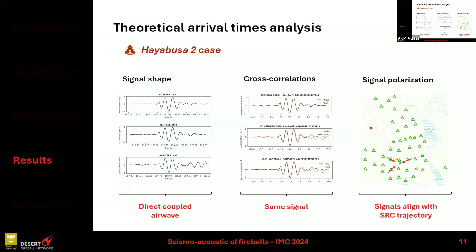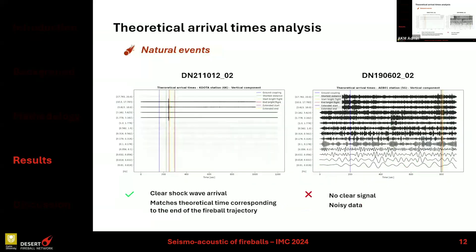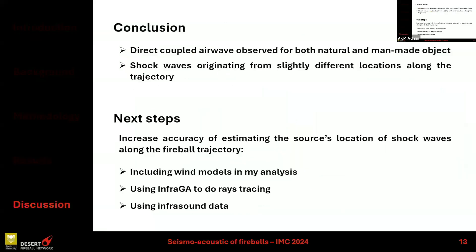More specifically, everything pointed to the start of the silent flight. So for Hayabusa2 we detected the direct shock wave from the start of the silent flight. For the natural events, sometimes it worked well — as with DN21, where there are really nice signals with a clear arrival of the shock wave matching the theoretical arrival time of the end of the trajectory. But in other cases, like DN19, I don't see a clear signal and just have really noisy data.